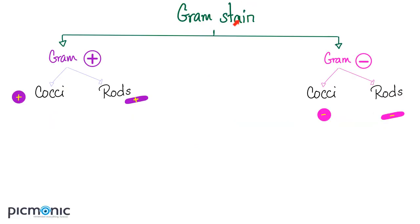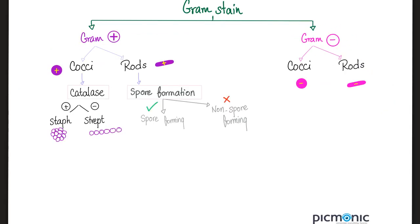We classify bacteria based on the gram stain — Gram was the name of a scientist, that's why it should be a capital G. The gram stain is either gram positive or gram negative. Gram positive bacteria are purple, gram negative are pink. We divide gram positive into cocci and rods, same with gram negative. The cocci are catalase positive or catalase negative.